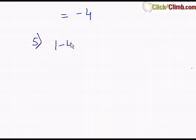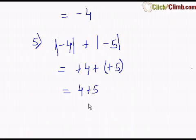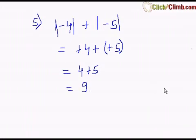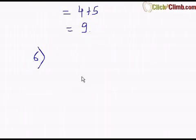Another example: absolute value of negative 4 plus the absolute value of negative 5. Before adding, I find their absolute values. Absolute value of negative 4 is positive 4, and absolute value of negative 5 is positive 5. I add 4 with 5: 4 plus 5 is 9. So the absolute value of negative 4 plus the absolute value of negative 5 equals positive 9.